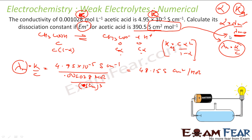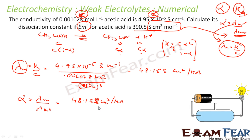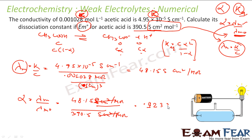Now I have λM = 48.15 S cm² per mol and λM⁰ = 390.5 S cm² per mol. So alpha = λM / λM⁰ = 48.15 / 390.5. The units cancel, giving α = 0.1233.